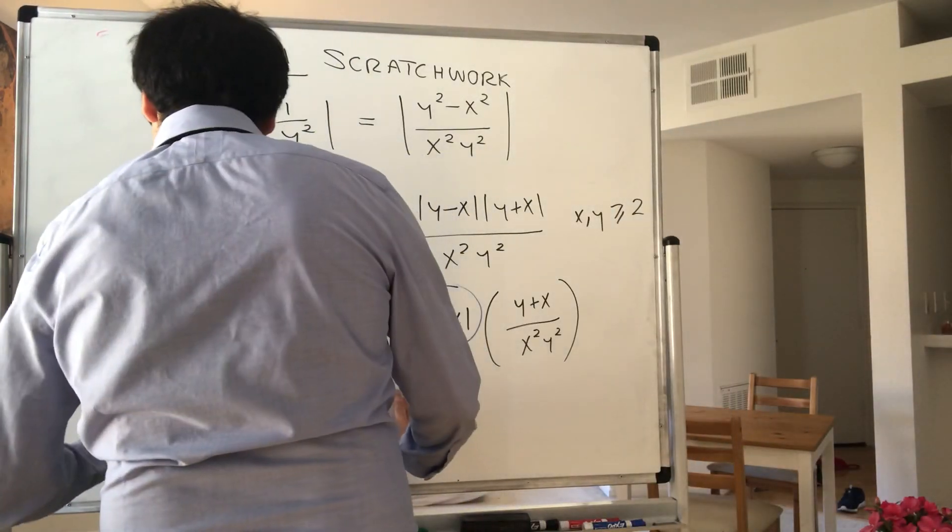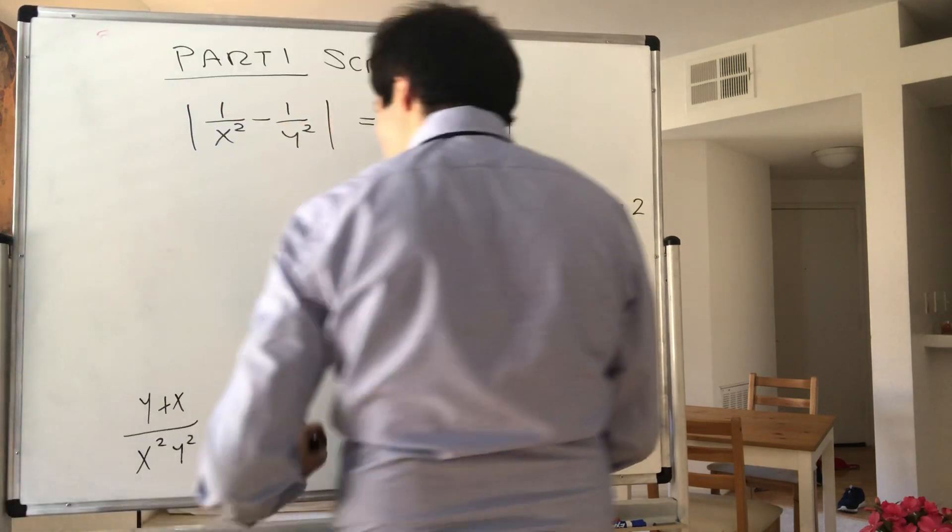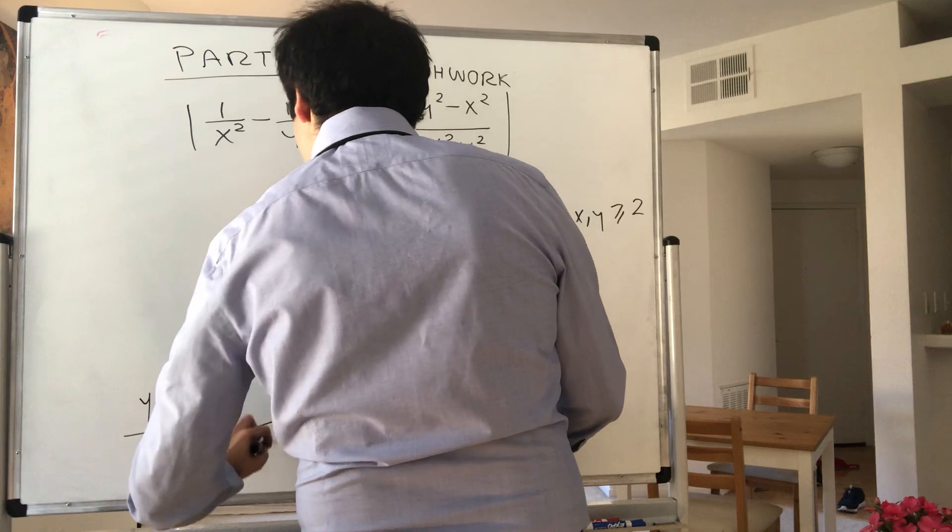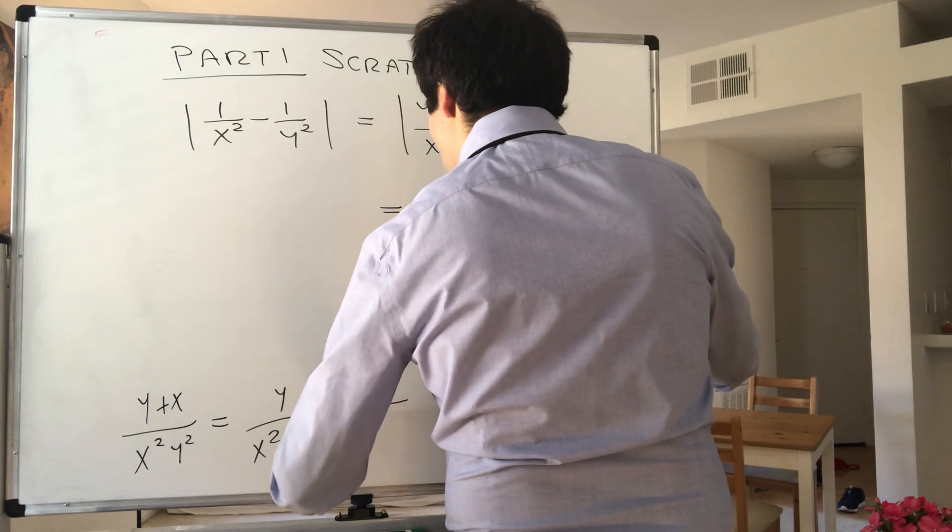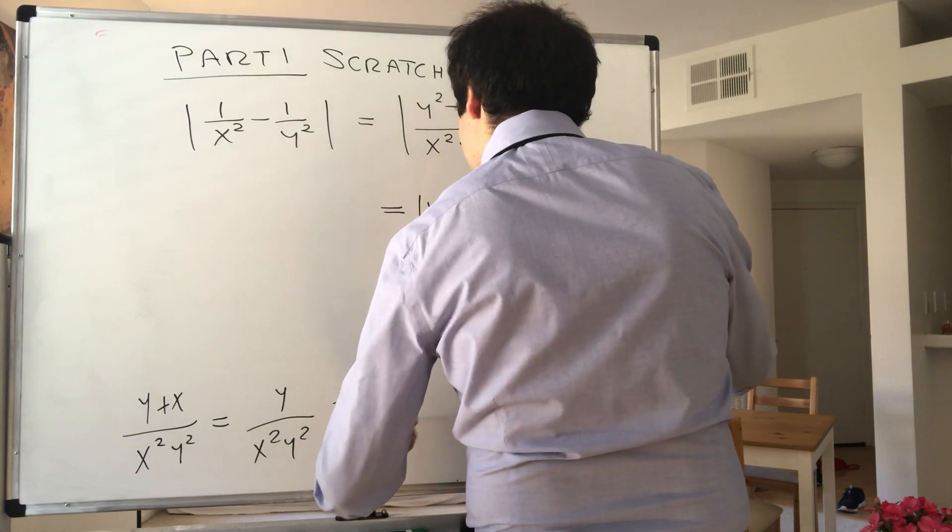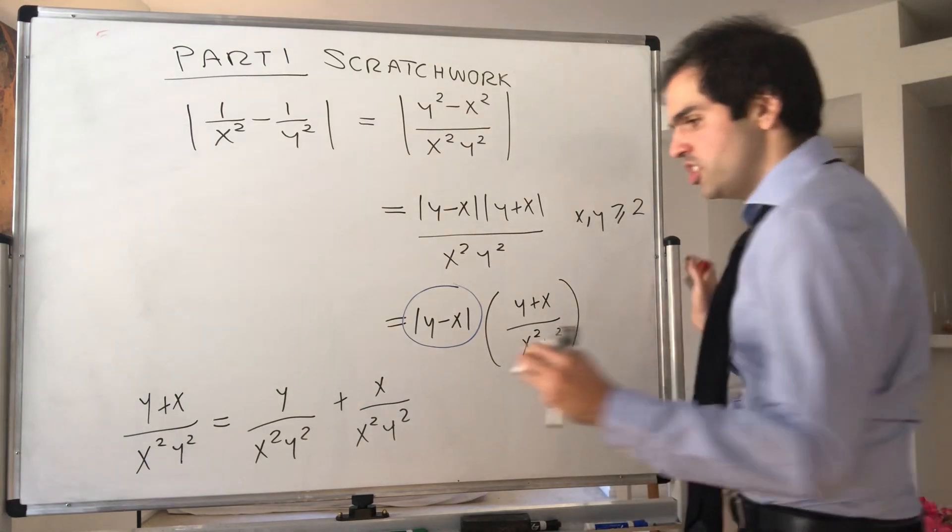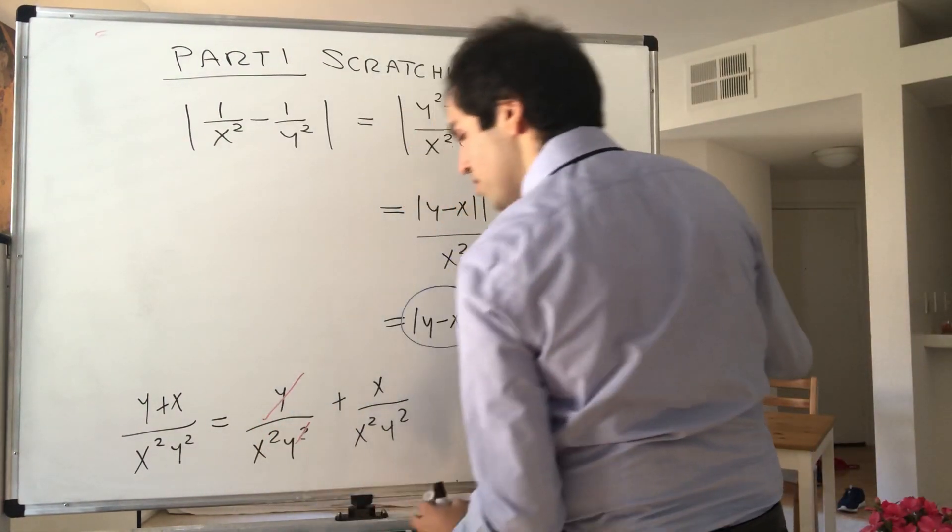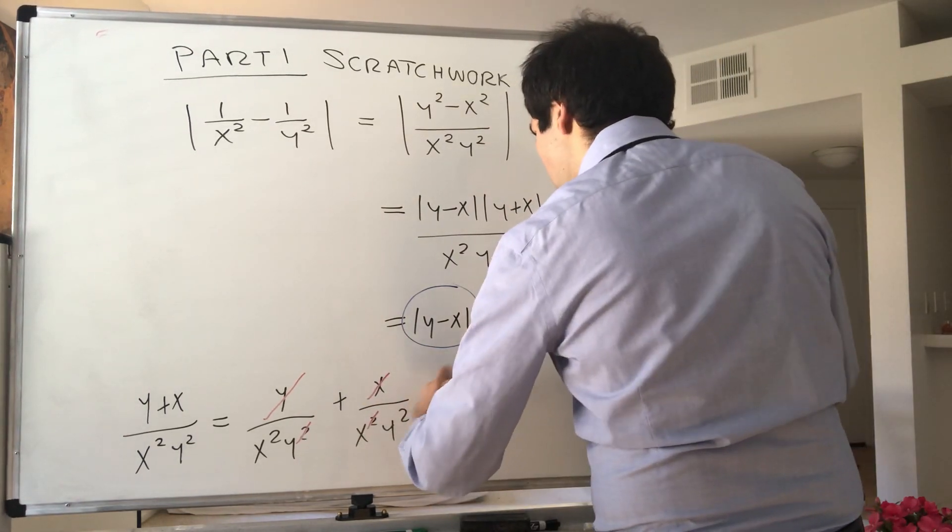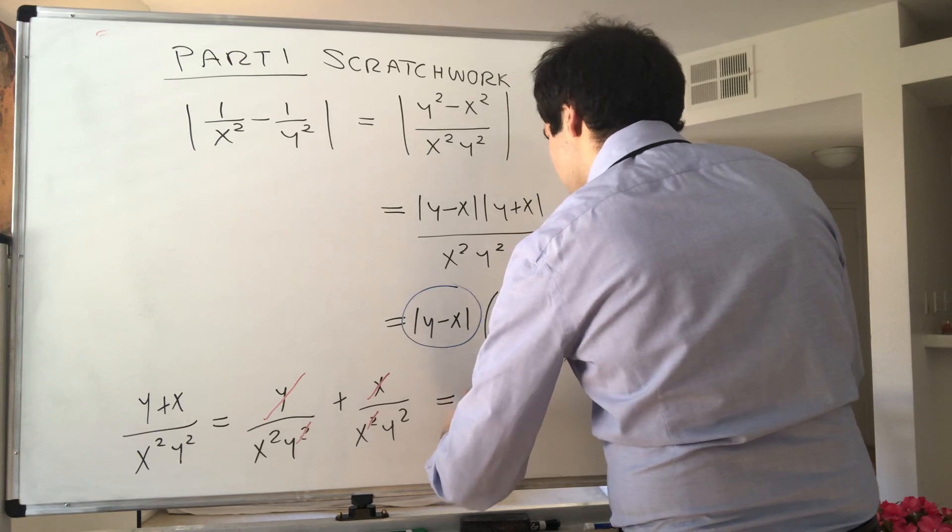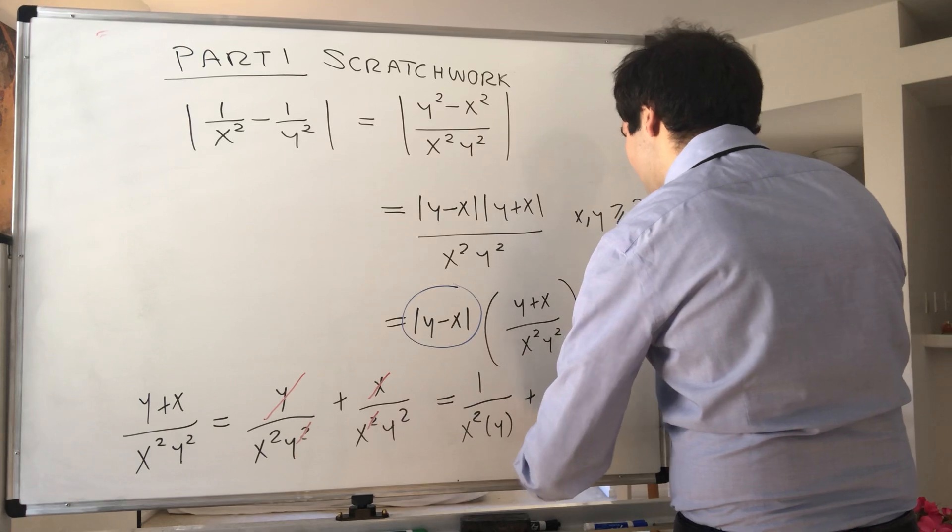So y plus x over x squared y squared. Well, that's just y over x squared y squared plus x over x squared y squared. On the other hand, notice there's a beautiful simplification here. The y here cancels out and the x here cancels out. So you're left with 1 over x squared times y plus 1 over x times y squared.